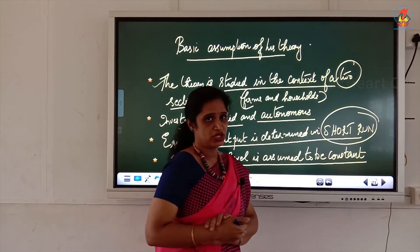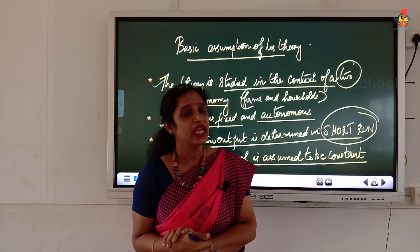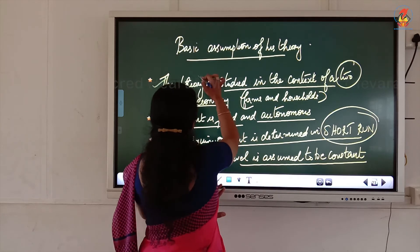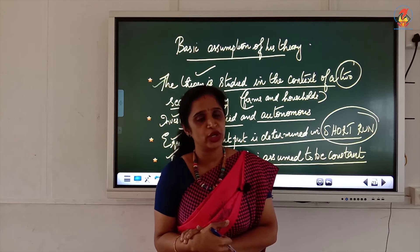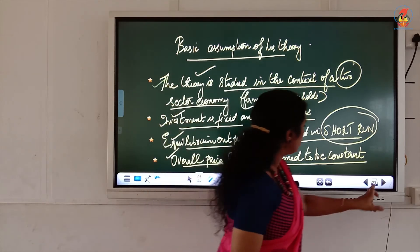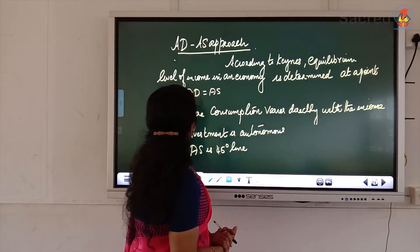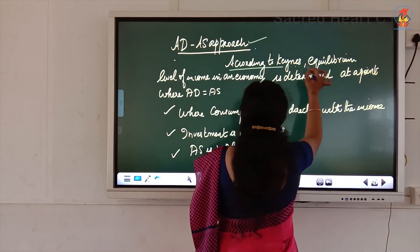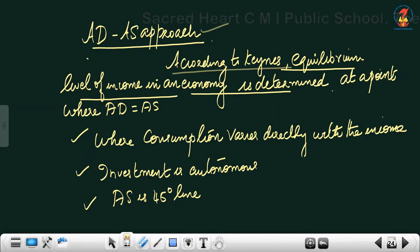The overall price level is also assumed to be constant. So the basic assumptions are: the theory is studied in the context of a two-sector economy; investment is fixed and autonomous; equilibrium output is determined in the short run; and the overall price level remains constant.